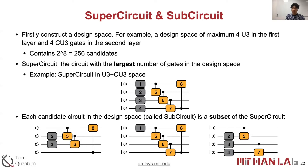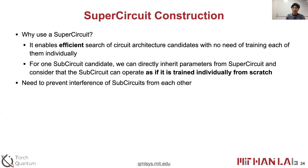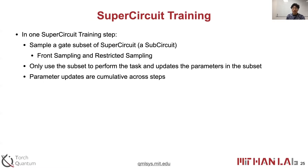A sub-circuit is a subset of the super circuit's gates. For example, one sub-circuit contains gate 2 and gate 3 in the first layer, and gates 5, 6, and 8 in the second layer. The super circuit enables efficient search with no need to train each candidate individually — a sub-circuit can directly inherit parameters from the super circuit and operate as if trained from scratch. Since all sub-circuits share parameters, we perform super circuit training by iteratively sampling and updating sub-circuits, using front sampling and restricted sampling to sample a candidate at each step and update its parameters cumulatively.